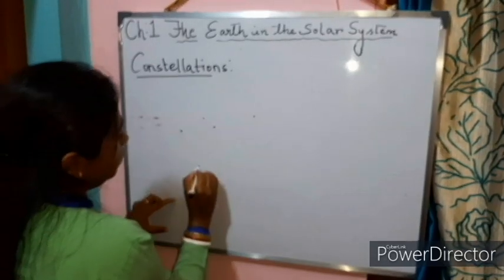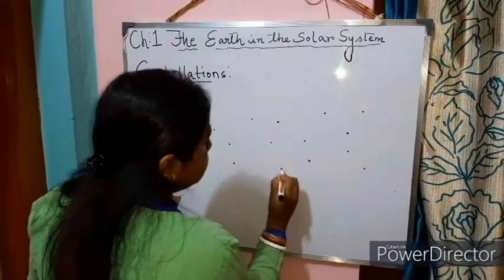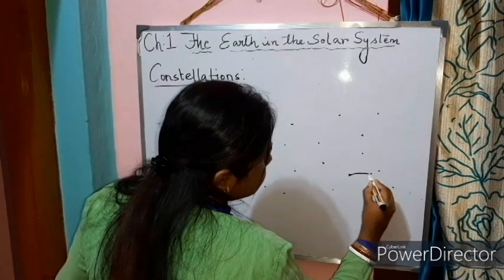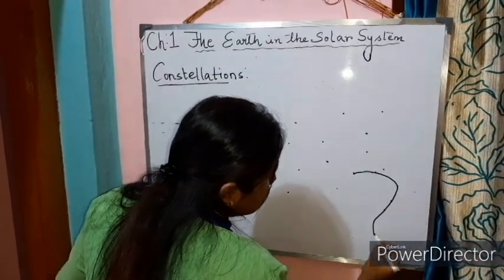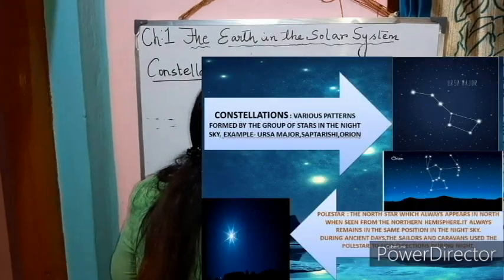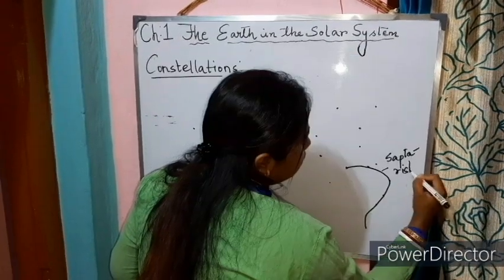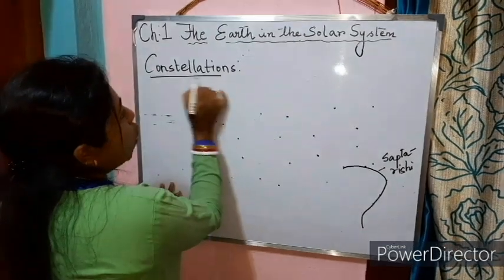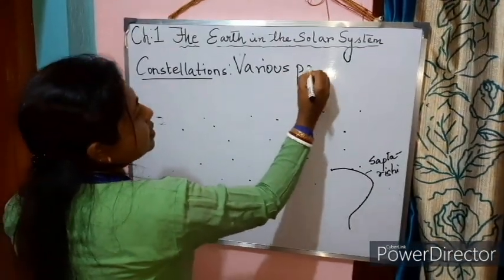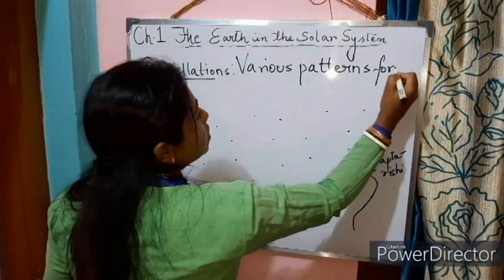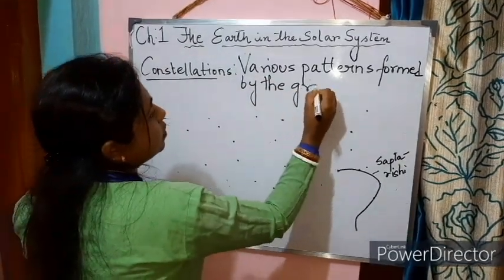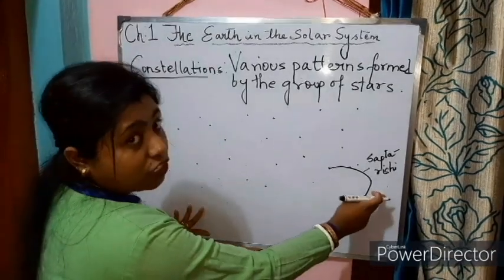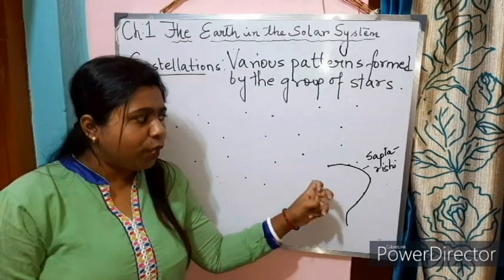In the night sky, there are certain patterns formed by the stars. Can you see this — like a question mark? You can easily see this in the night sky. We call this Saptarishi, meaning seven sages. These are patterns — different patterns formed in the night sky — and they are called constellations. Various patterns formed by a group of stars in the night sky are called constellations, like Saptarishi, which you can easily locate in the sky.